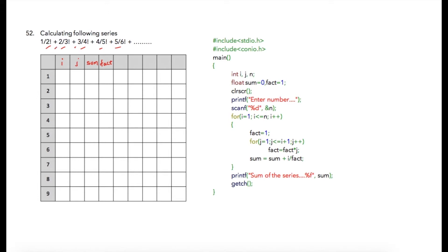We have a plus operator used, so for each section we need to do the calculation and add subsequent sections. If this is my first iteration, this is second, third, and so on — we can see the iteration number is divided by the factorial of the iteration number plus one. So if we are in the third iteration, three is divided by factorial of four, and each result is added with the previous sum.